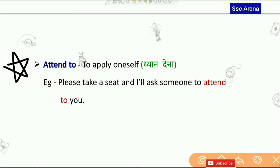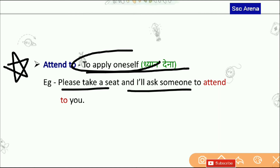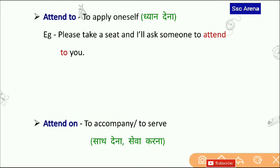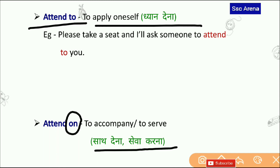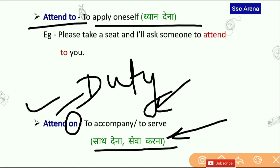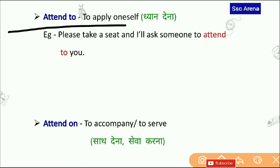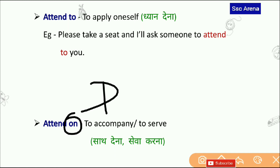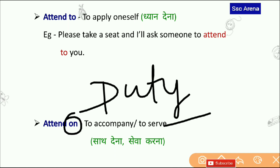Next है — Attend To. Attend To का मतलब होता है ध्यान देना — to apply oneself। Please take a seat and I will ask someone to attend to you। Attend On भी है — Attend To का मतलब है किसी काम पर ध्यान देना, लेकिन Attend On का मतलब होता है किसी को serve करना — जैसे waiter hotel में serve करता है या nurse patient को serve करती है। Attend On duty के लिए use होता है और exam में Attend On के आने के chances 90% से ज़्यादा हैं।